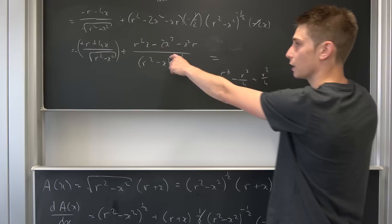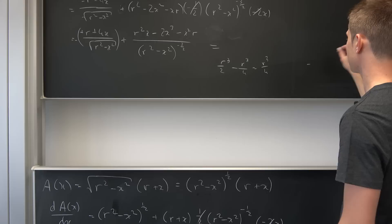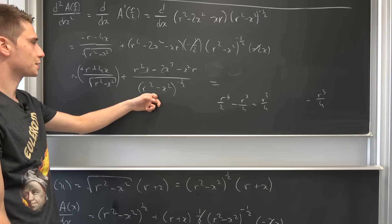But we also have this term right here. So negative 2 times x to the third power, and this is nothing but negative r to the third power over 4. And you see up here everything is going to cancel out in the process. So this seems to become zero in the end.